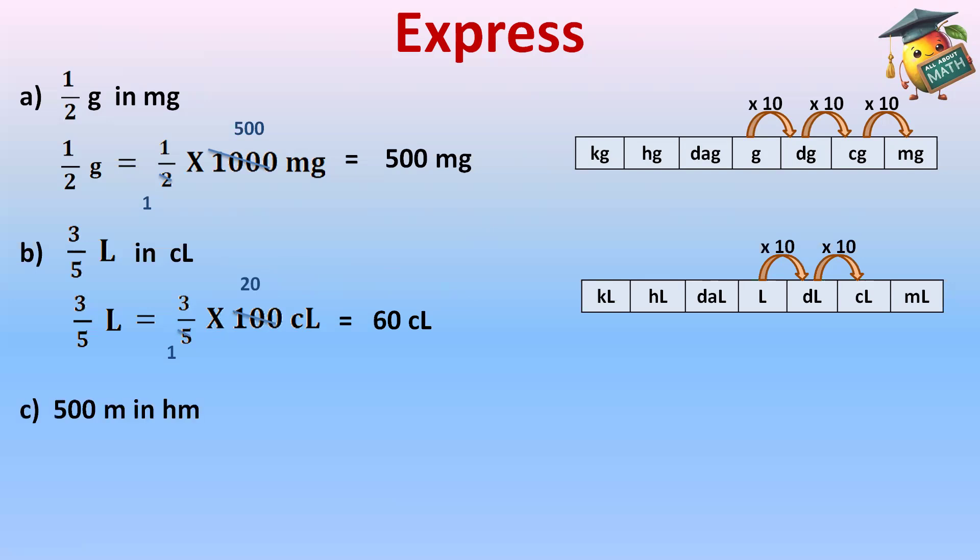Part C, we have 500 meters in hectometers. We have to express meter into hectometers. The mnemonic for that is King Henry died, mother didn't cry much. Let's write the sequence of units.